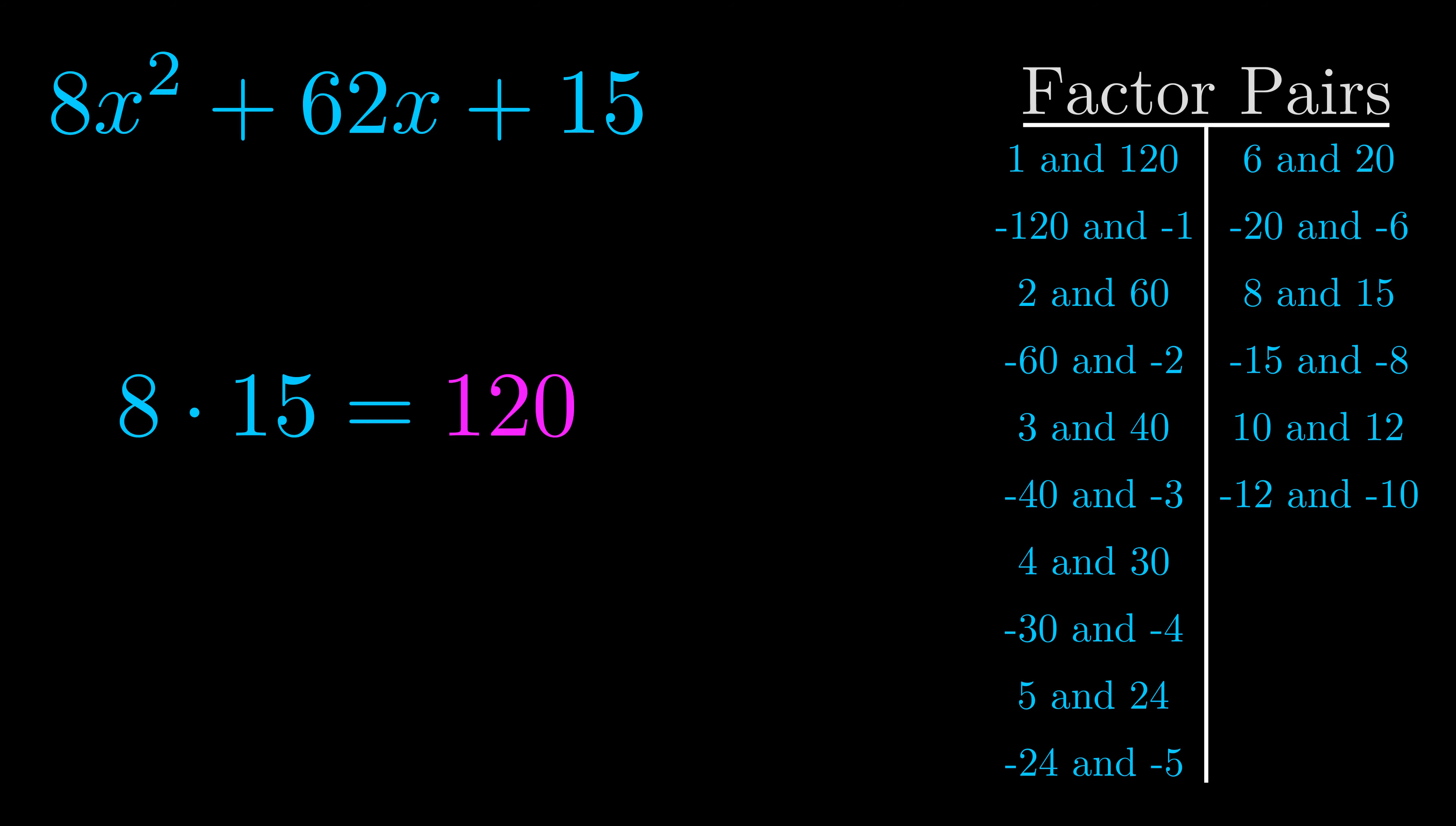Now once you have these factor pairs, the goal is to find which of these pairs adds to the b value. The b value is the coefficient on the x term.